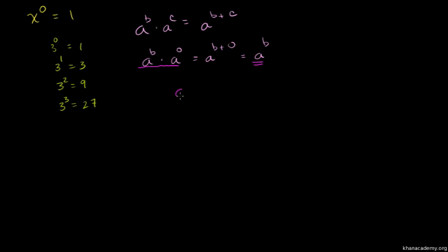If we divide both sides by a to the b, on the left hand side we have a to the 0, and this equals 1 because a to the b cancels out. So if you read the argument, a to the power 0 is equal to 1.